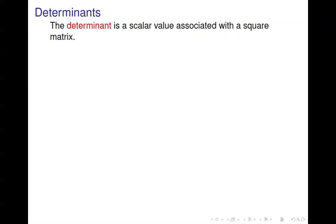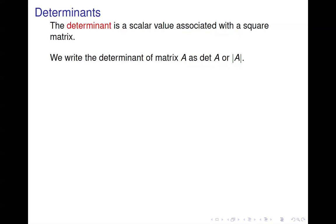We're going to talk about determinants. The determinant of a matrix is just a scalar value that is associated with any square matrix, so we only talk about the determinant of a square matrix. The notation is det of A, or sometimes you see it with vertical bars around A, like the absolute value of A.